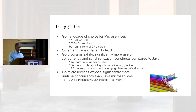Go programs exhibit significantly more use of concurrency and synchronization constructs compared to languages such as Java. When we observe the places where concurrency is created, such as creating a thread or creating a GoRoutine, there is about one and a half times more concurrency creation places per million lines of code in Go compared to Java. Similarly, there is about five and a half times more use of point-to-point synchronization in Go compared to Java — things such as locks, condition variables, and more.